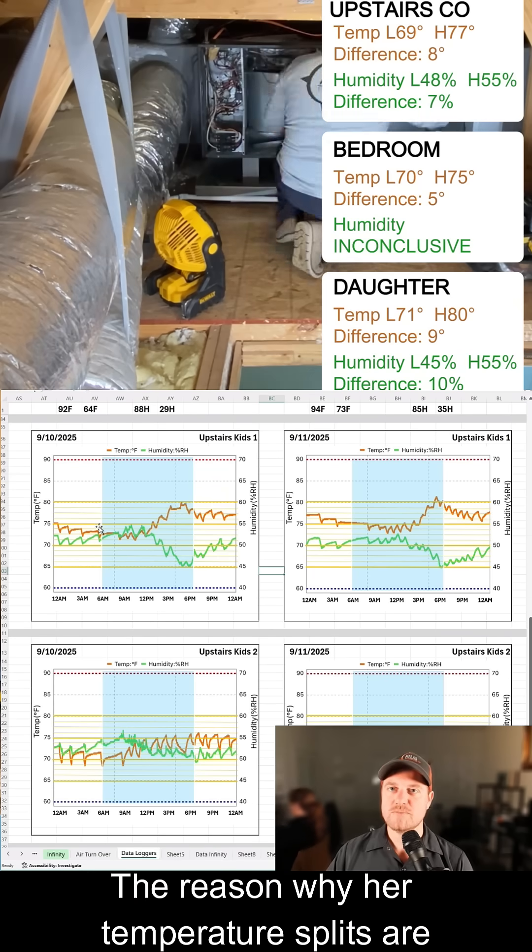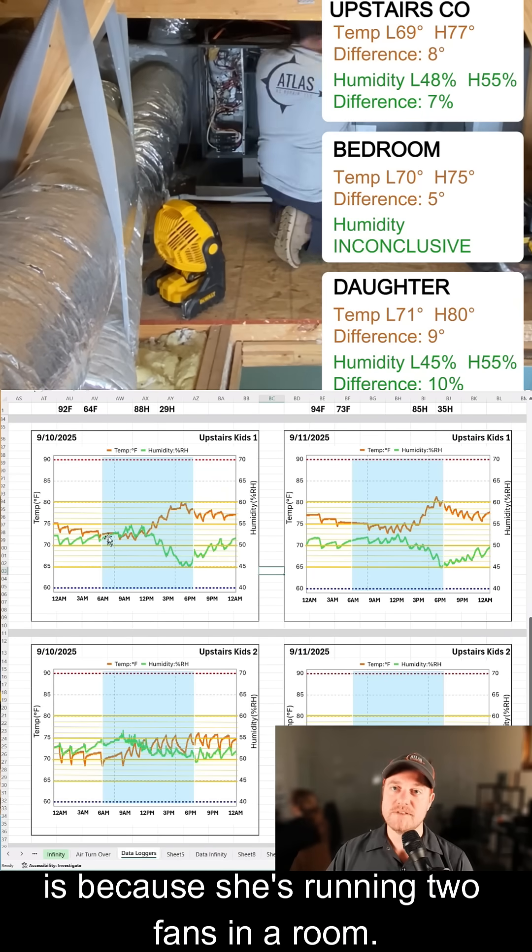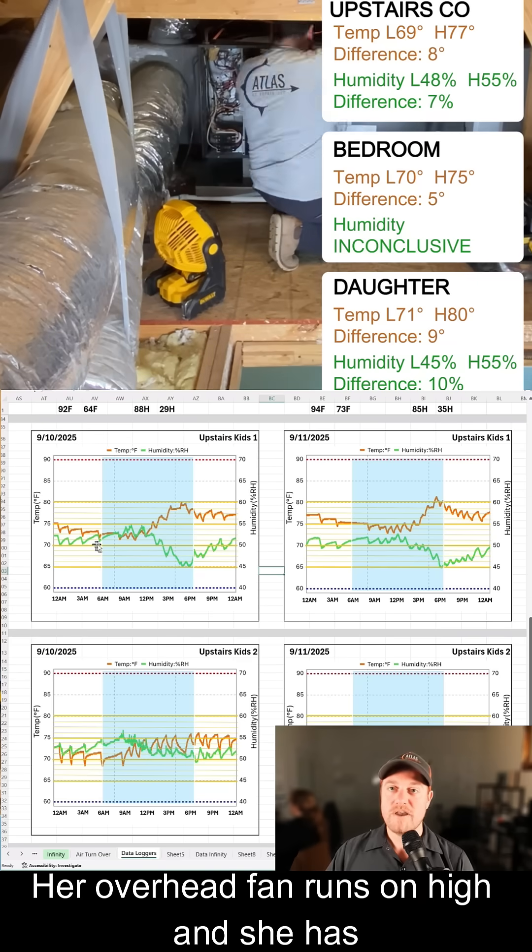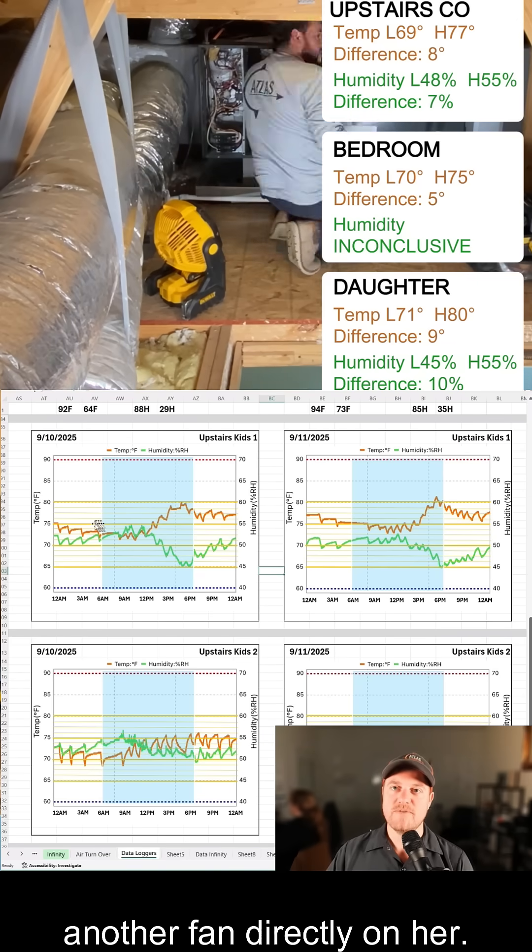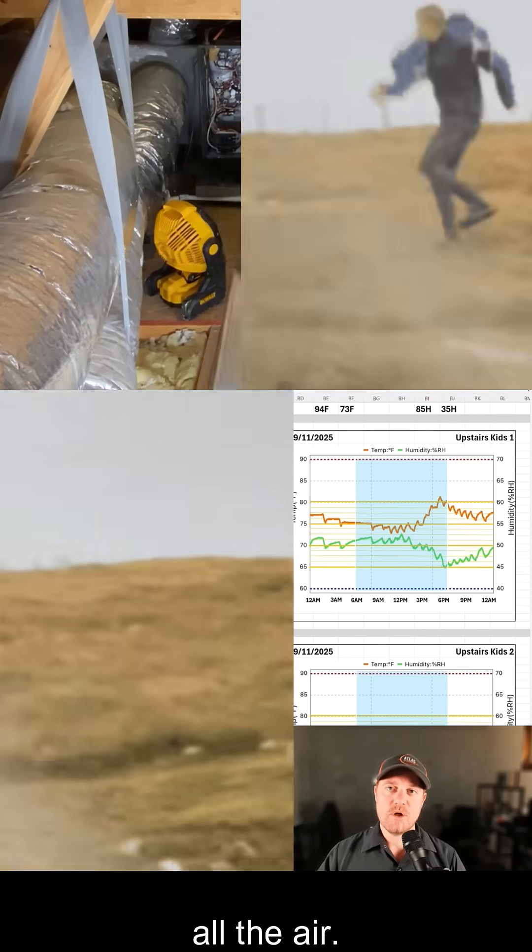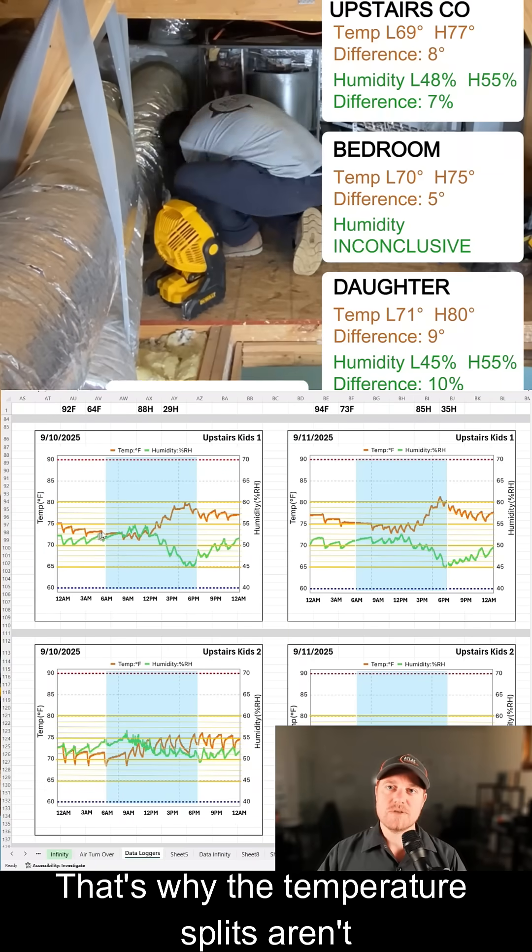The reason why her temperature splits are around one and a half degrees is because she's running two fans in her room. Her overhead fan runs on high, and she has another fan directly on her, so it's like a whirlwind in there mixing up all the air. That's why the temperature splits aren't that big.